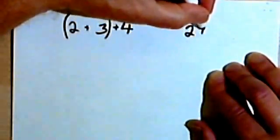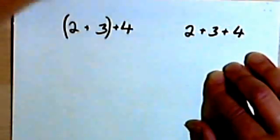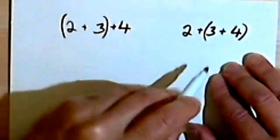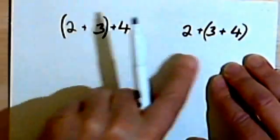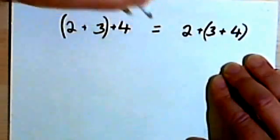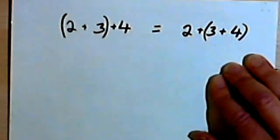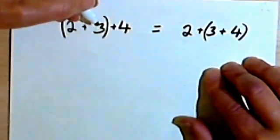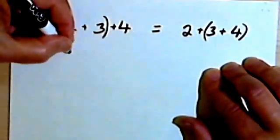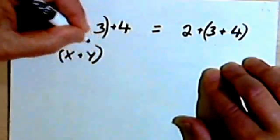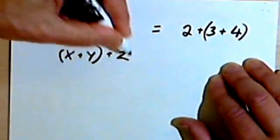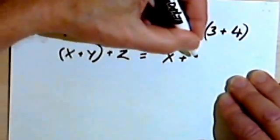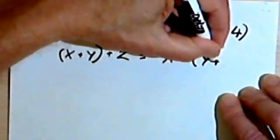Or we could take those same 3 numbers, 2, 3, and 4. We could add the 2 to the sum of the 3 and the 4, and we're going to get the same result either way. When things associate, when you have an association of people, you have groups of people. So this is the associative property of addition. Once again, it will also work for variables. So I could have x plus y in parentheses, plus z, and that would be the same as x plus, and then my parentheses, y plus z.